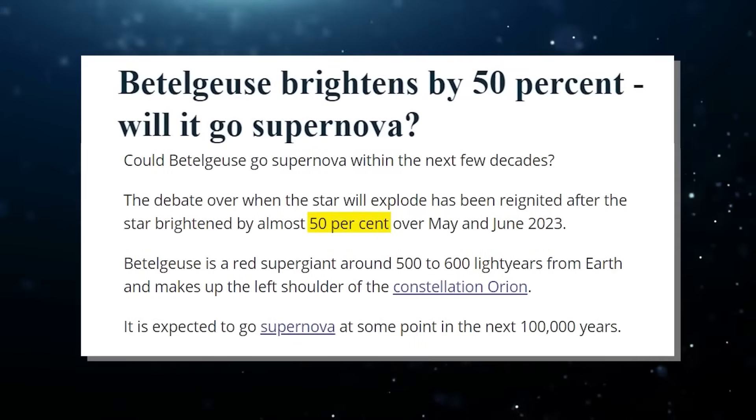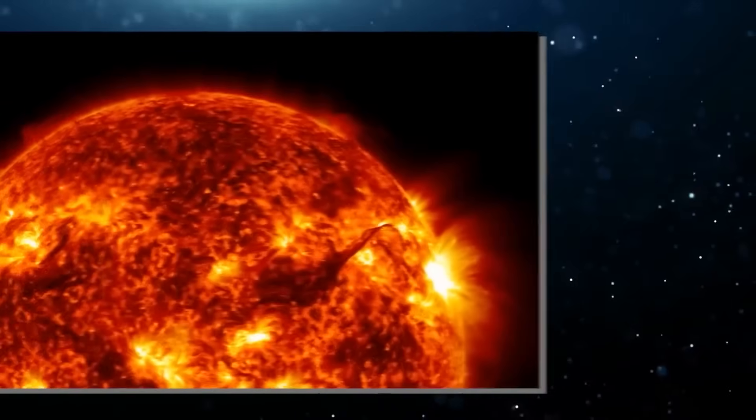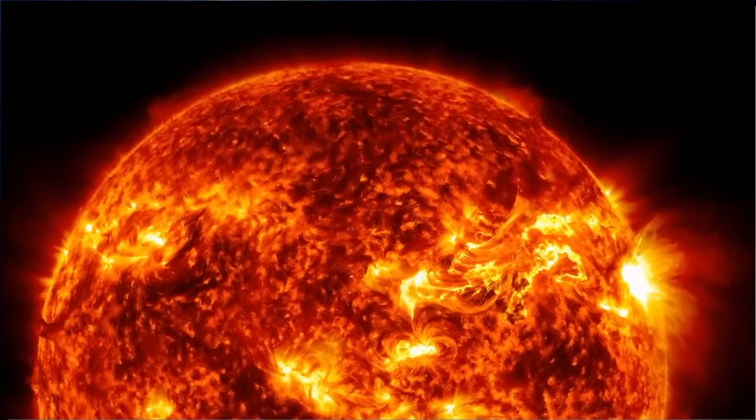Such marked fluctuations, while typical of variable stars, were uncharacteristic for a star like Betelgeuse, which had largely displayed predictable luminosity cycles.